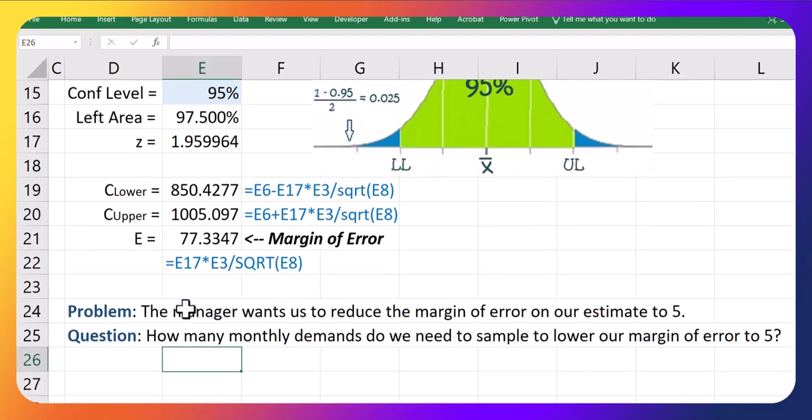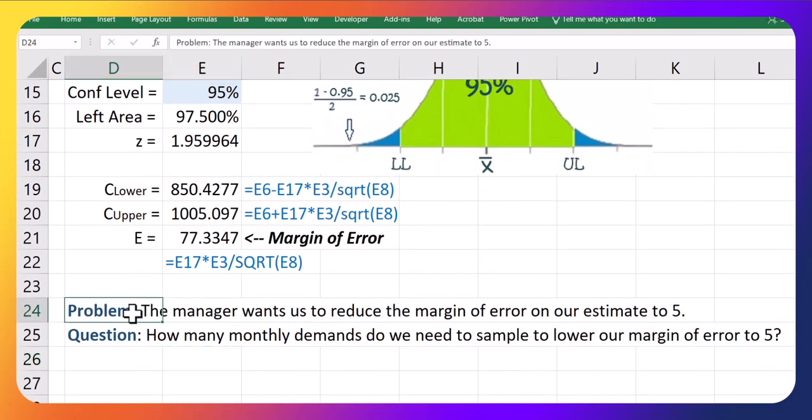So let's say the manager wants us to reduce the margin of error on our estimate to five units instead of 77. How many monthly demands do we need to sample to lower our margin of error to five? So that's the question we want to solve.